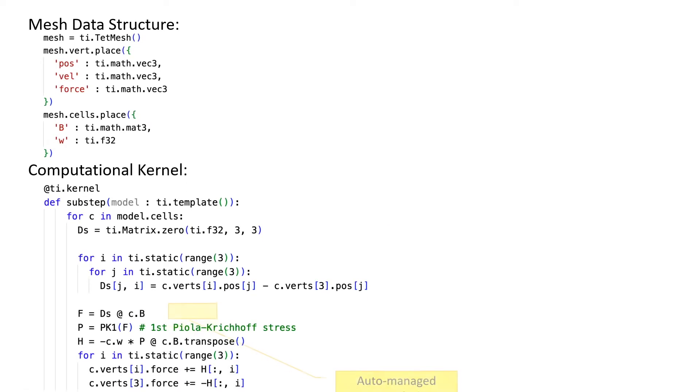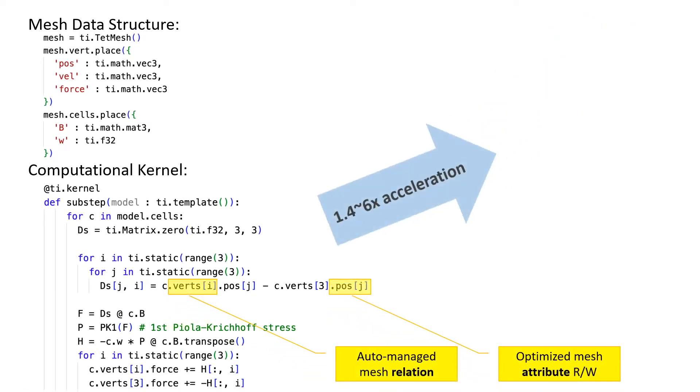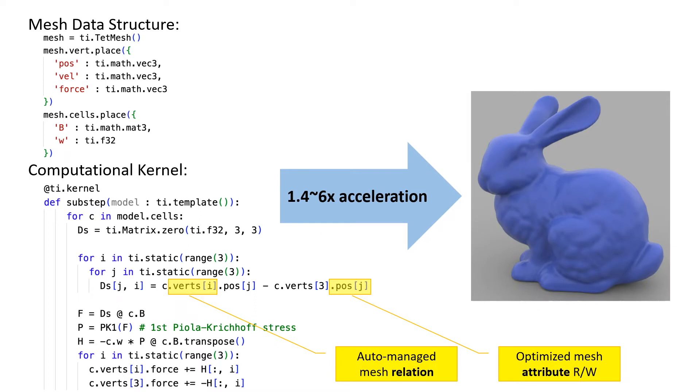As a result, our compiler achieves a consistent speed-up ranging from 1.4 to 6 times faster compared to other mesh data structures and compilers on typical applications.